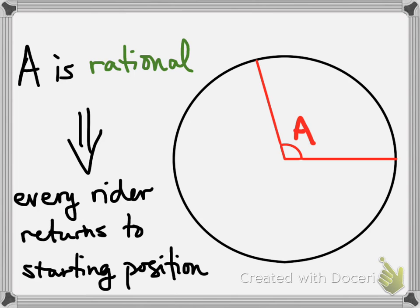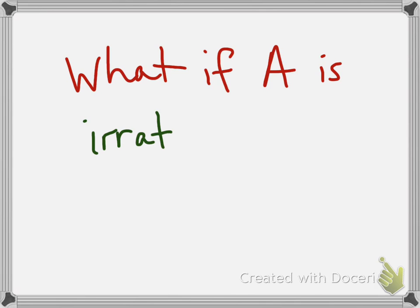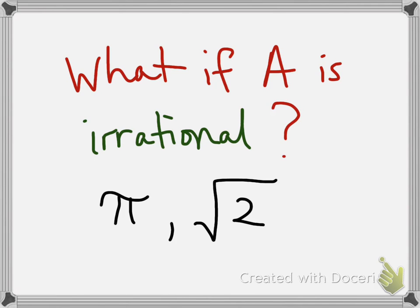But we know not all numbers are whole numbers or fractions. There are irrational numbers, too, like pi, or the square root of two. What happens if the carousel turns an irrational number of degrees each second?